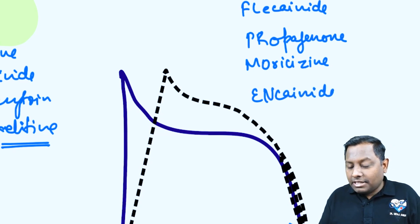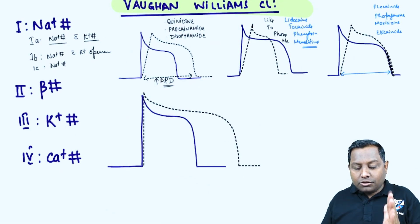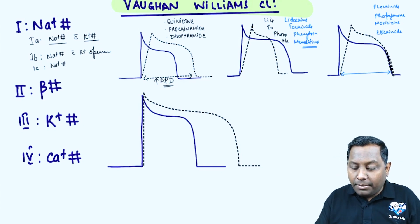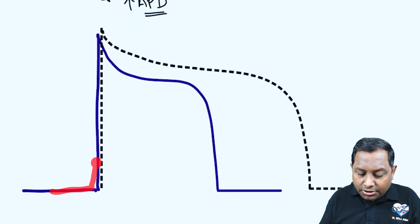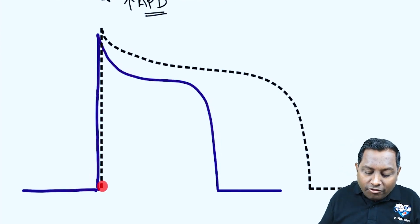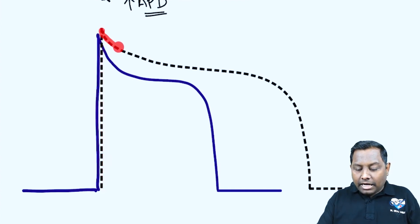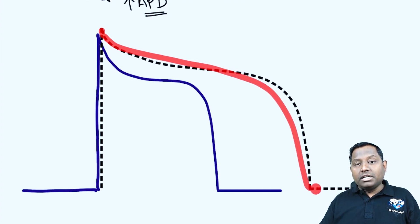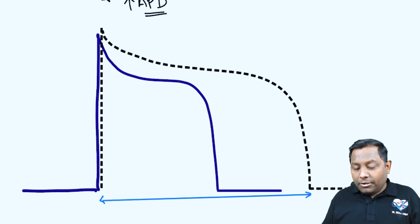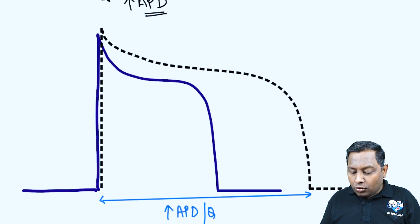A close differential on the graph is Class 3 anti-arrhythmic drugs, which have only potassium channel blocking property. The normal action potential duration is shown in dark blue. With only potassium blockade, there is no effect on the slope of depolarization — the slope remains as shown by the dotted line. However, repolarization is slower, causing an increase in overall action potential duration only.